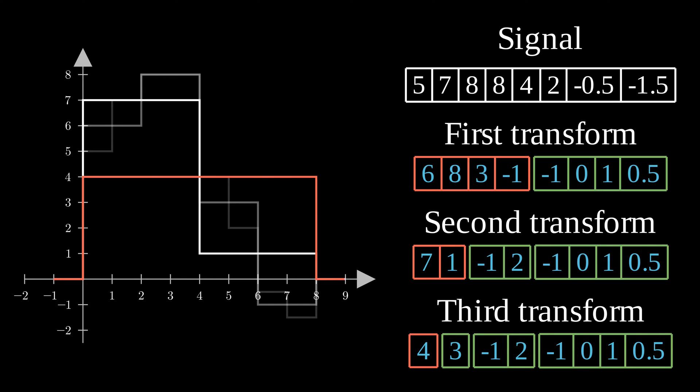The approximation space is now composed of only one value. This value represents the mean value of the whole signal. As you can see, as we move towards the right in our table, in other words, as we move towards more detailed spaces, values are becoming smaller and smaller. This was the aim of the wavelet transform, compress the information into a small space.